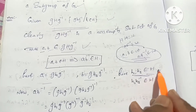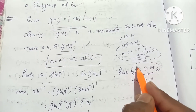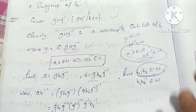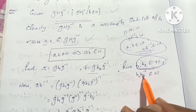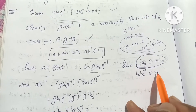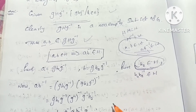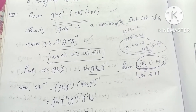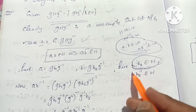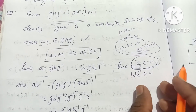We will also work with H. So H₁·H₂⁻¹ belongs to H. We will not need H₁ inverse separately. We will prove this value: H₁·H₂⁻¹ belongs to H.